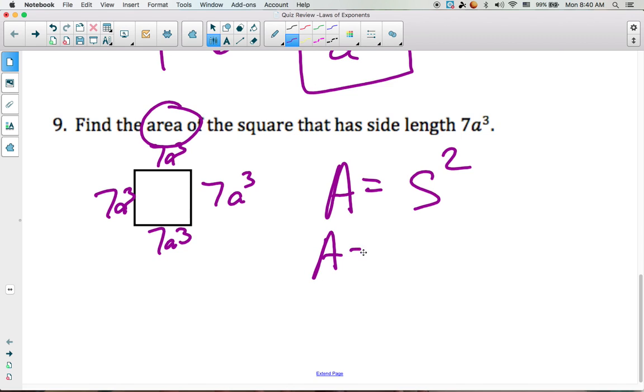So what we're going to do is we're going to take the side length, we'll plug it into our formula, we're going to take 7a to the third, and then we're going to square that. Or you can think of it as 7a to the third times 7a to the third, however you want to look at it. So depending on the way you write it will determine which properties or how you use them. If I write it 7a to the third times 7a to the third, I'll just multiply. 7 times 7 is 49.